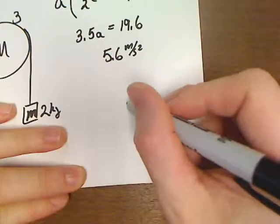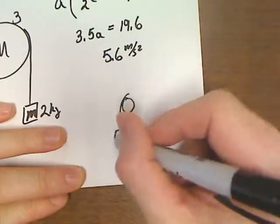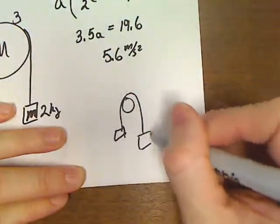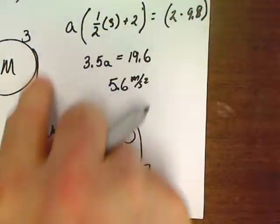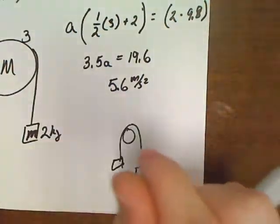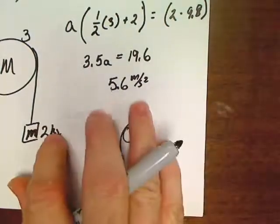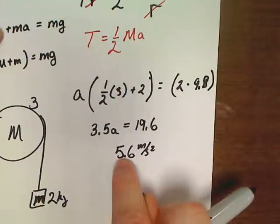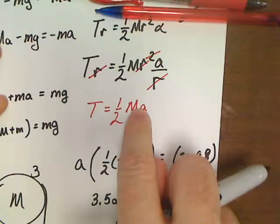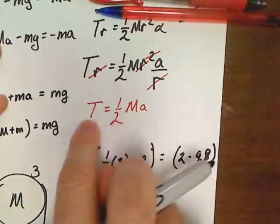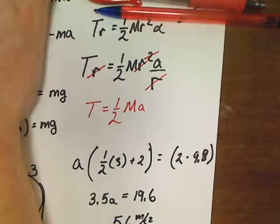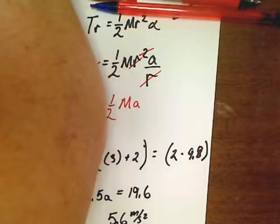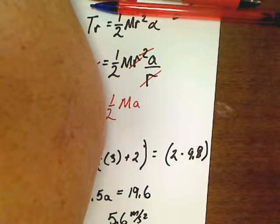Your answer should always come out less than 9.8 m/s², because gravity is what accelerates the system in the first place. Usually the problem asks for a first, then you substitute back to find tension T. That's all there is to it — good luck, and seasons greetings, even though I'm recording this in March.